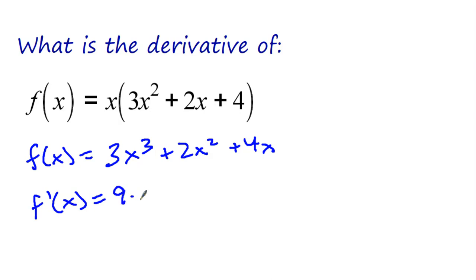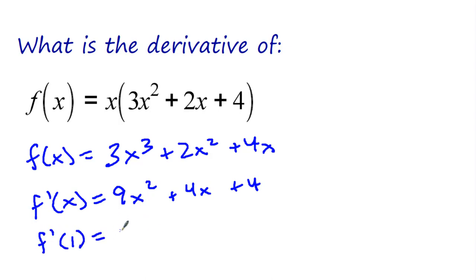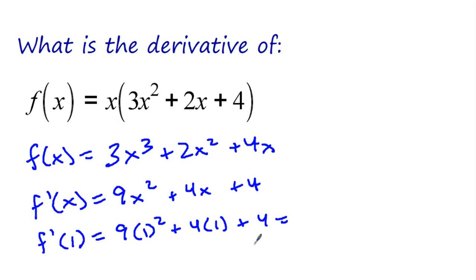So 3 times 3 is 9. This becomes 9x squared. This becomes 4x plus 4. And then if we have a value like 1, we can plug it in at our function, and we get 9 times 1 squared, 4 times 1 plus 4, and we get 9 plus 4 plus 4, which is 17.